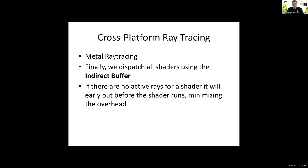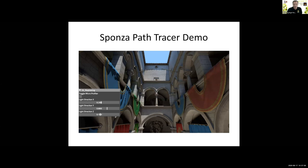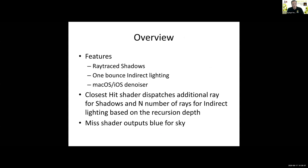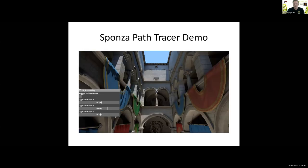To prove that all this works, we implemented a demo — it's a sponsored path tracer. It supports ray-traced shadows and one-bounce indirect lighting. For Mac OS and iOS, it also supports a denoiser. The closest hit shader dispatches additional rays for shadows and a number of rays for indirect lighting, and the miss shader outputs the blue for the sky. So when you look at the picture, you have a rough idea where these come from. Now let's see the demo.